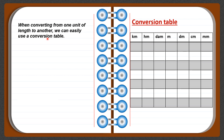Here we have: kilometer is the largest, hectometer is next, then decameter, then meter, then decimeter, then centimeter, and millimeter is the smallest. So the order in the table is: kilometer, hectometer, decameter, meter, decimeter, centimeter, and millimeter. We are going to convert from one unit to another. Remember, one column in the table holds one digit.